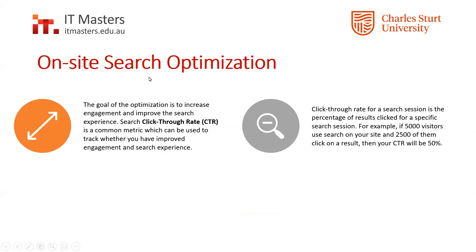On-site search optimization is what it's called, and the goal of optimization is to increase engagement and keep people on your website. The search click-through rate is a metric of that and can be used to track whether you've improved engagement and search experience. You can actually go in and see how customers are searching, what they're searching for, and whether they bounce, click through, or purchase. The click-through rate for a search session is the percentage of results clicked — for example, if 5,000 visitors use the search on your site and 2,500 click on a result, your click-through rate is 50%.